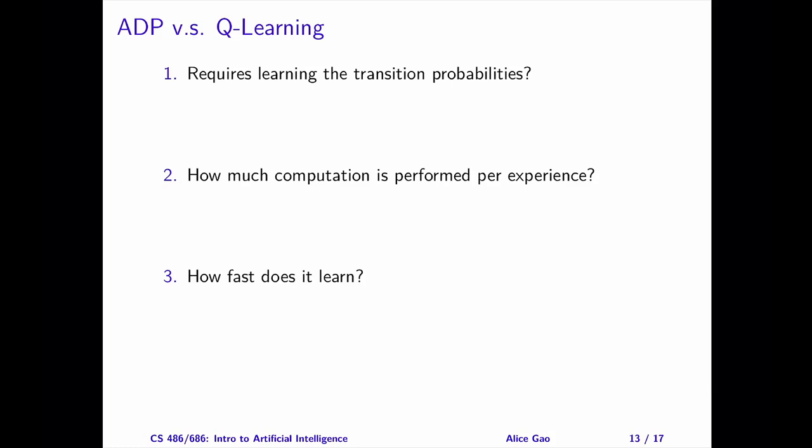Number three, how fast does the algorithm learn? ADP typically converges faster than Q-learning. Q-learning learns slower and shows much higher variability.